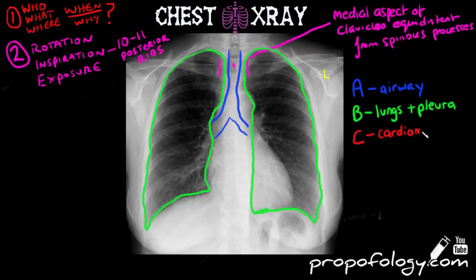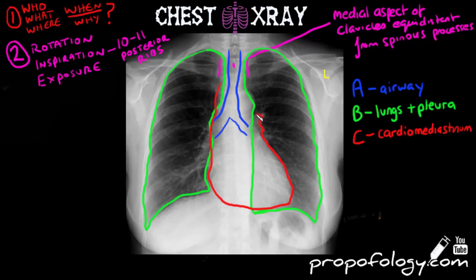For C, you're going to be looking at circulation or the cardiomediastinum. You're going to try to trace the outline of the heart — look at the right side first, tracing round the apex and then the aortic knuckle at the end. You're looking for an enlarged heart or a widened mediastinum.